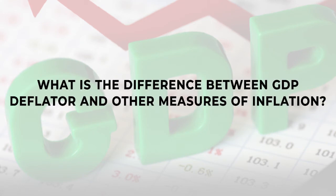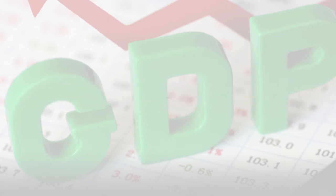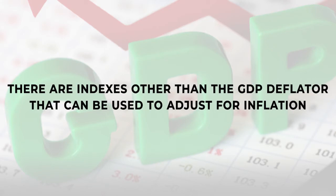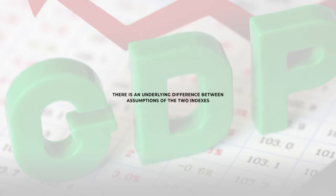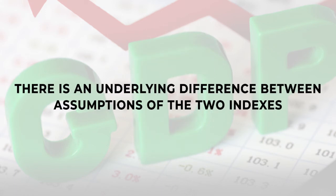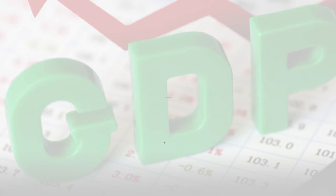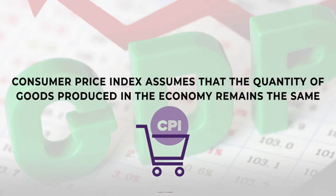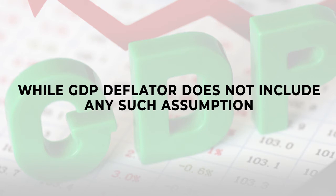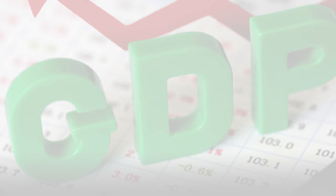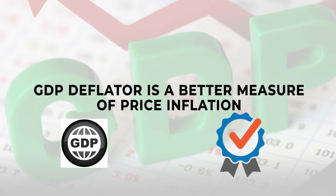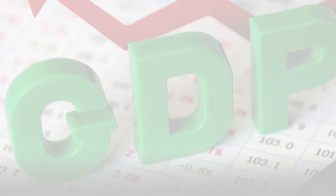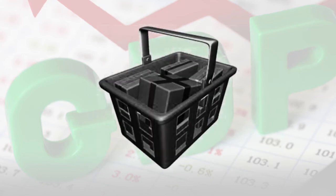There are indexes other than the GDP deflator that can be used to adjust for inflation. One example is the Consumer Price Index (CPI). However, there is an underlying difference between the assumptions of the two indexes. CPI assumes that the quantity of goods produced in the economy remains the same, while the GDP deflator does not include any such assumption. In this sense, the GDP deflator is a better measure of price inflation, as it accounts for changes in the basket of goods produced as well as the changes in the prices of these goods.